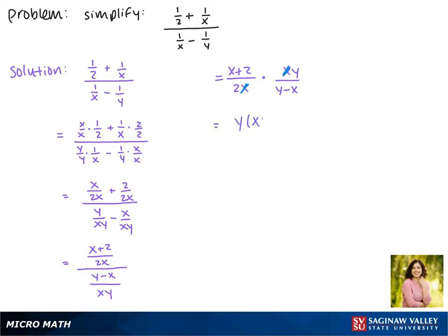So our final answer is y times x plus 2 over 2 times y minus x. This is one way that we can write our answer. We could also distribute that y and distribute the 2 to get xy plus 2y over 2y minus 2x.